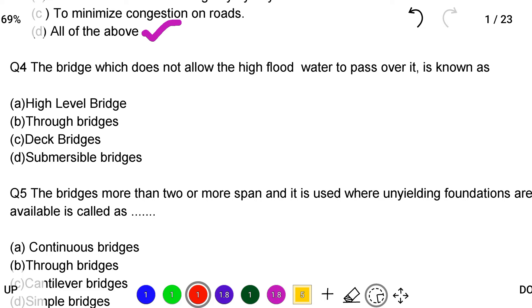Next question: the bridge which does not allow the high flood water to pass over it is known as option A high level bridge, option B through bridge, option C deck bridge, option D submersible bridge. So the correct answer is option A high level bridge.